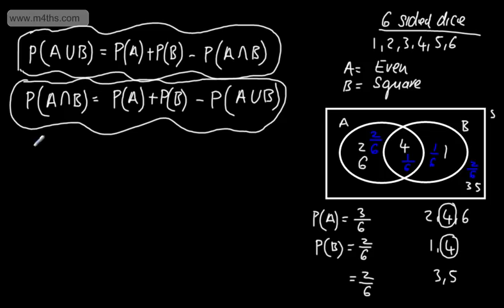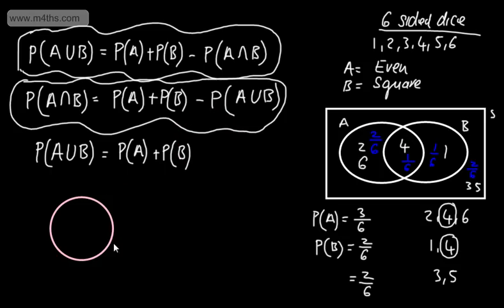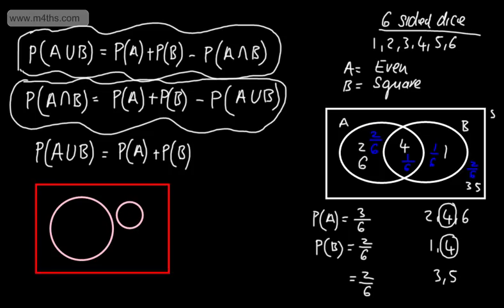Let's look quickly at mutually exclusive events. For mutually exclusive events, the probability of A union B is simply the probability of A plus the probability of B, as we don't have an intersection so we don't need to subtract it. In a Venn diagram for mutually exclusive events, the two circles don't overlap — there's no intersection.